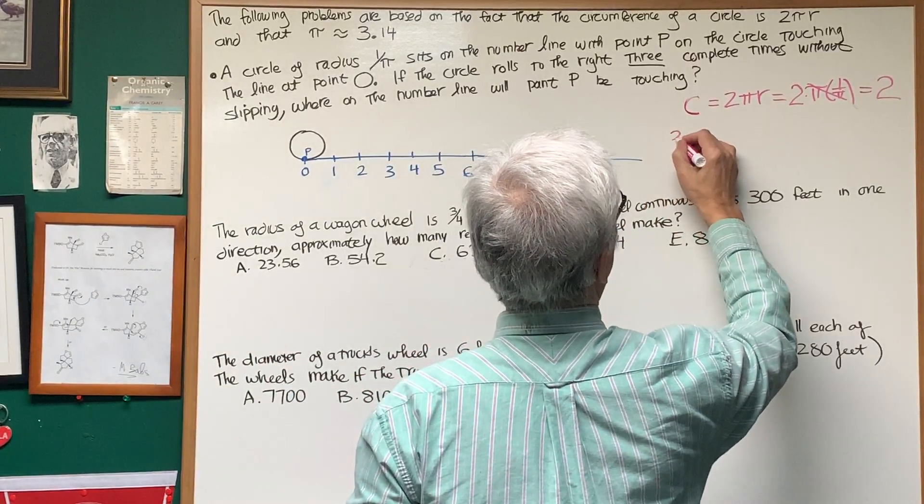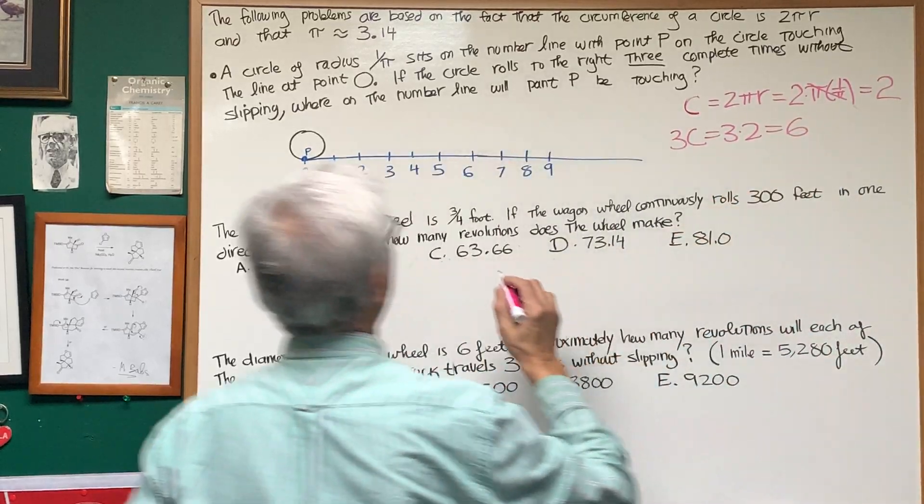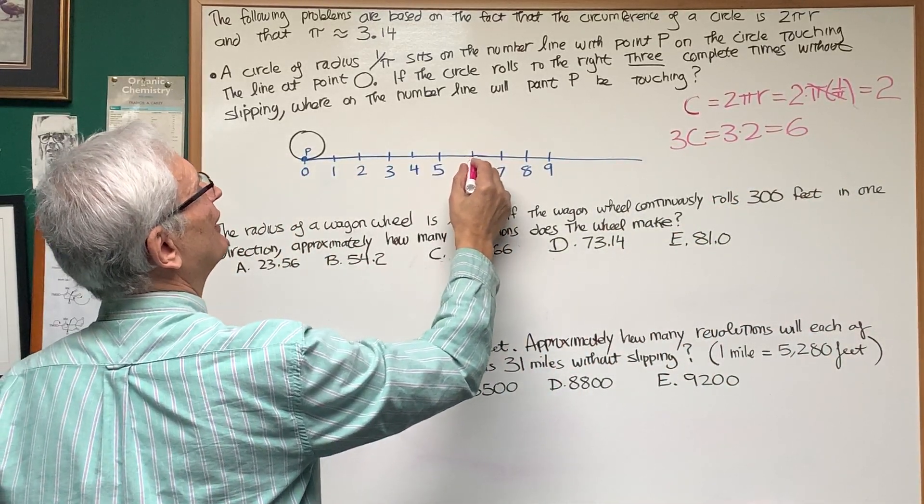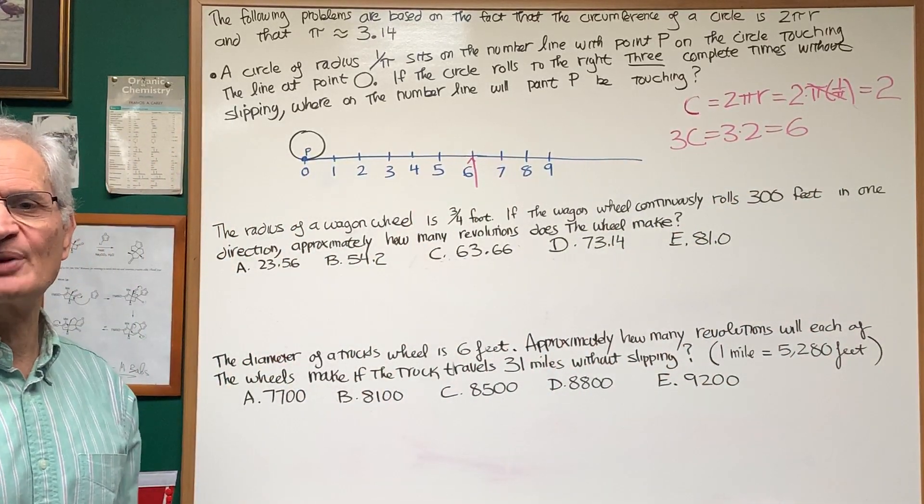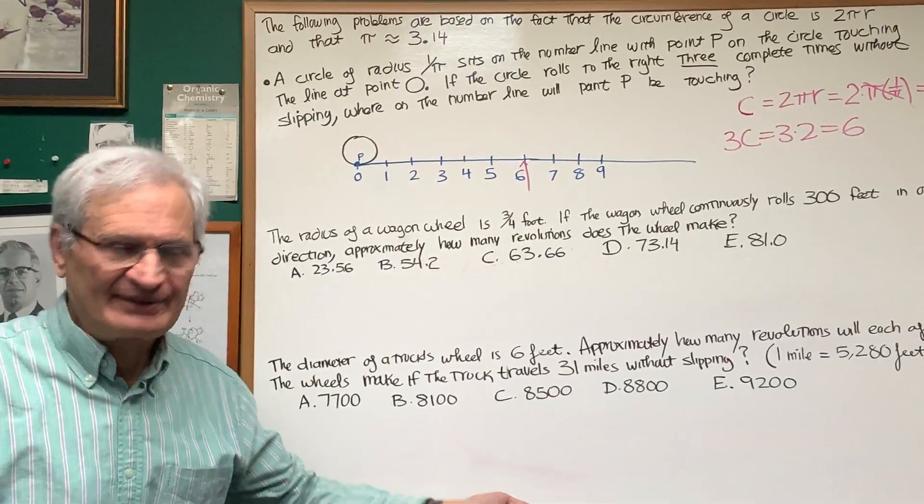How many units is 3 circumferences? That would be 3 times 2, which is 6. And therefore, I know that if the circle rolls to the right three times, point P is going to coincide with 6 on the number line.